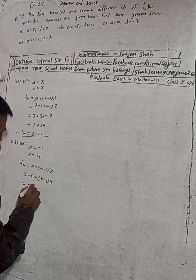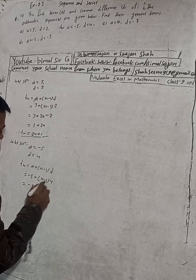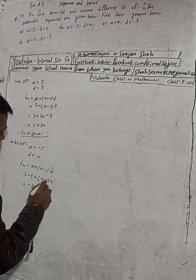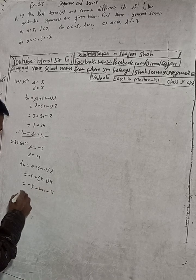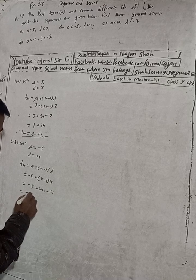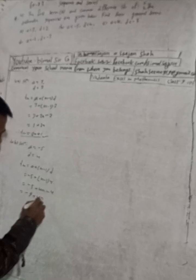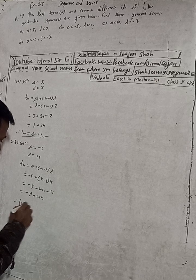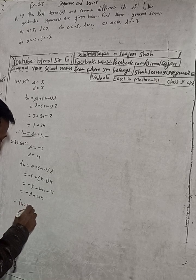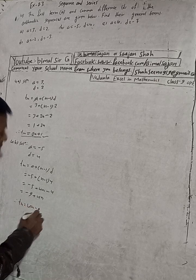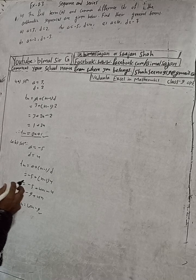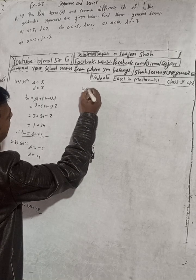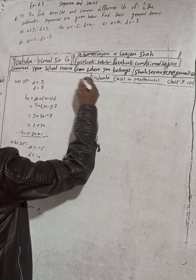This gives minus 5 plus N into 4, which is 4N, plus minus 4. Now minus 5 minus 4 gives minus 9, plus 4N. Therefore Tₙ = 4N minus 9. That is the required answer.